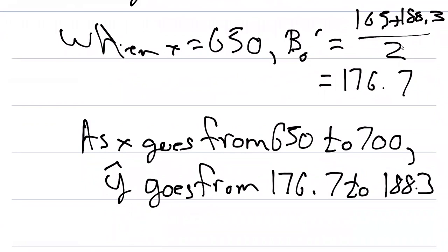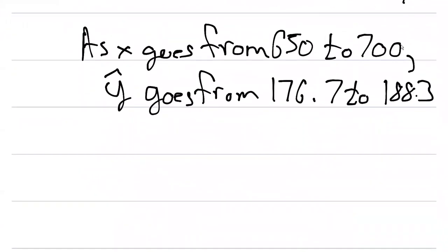That's important to know. What we can then do is now find the value for beta one hat. So then beta one hat is going to equal 11.6. Remember, that's the difference between the two values as y hat goes from 176.7 to 188.3.